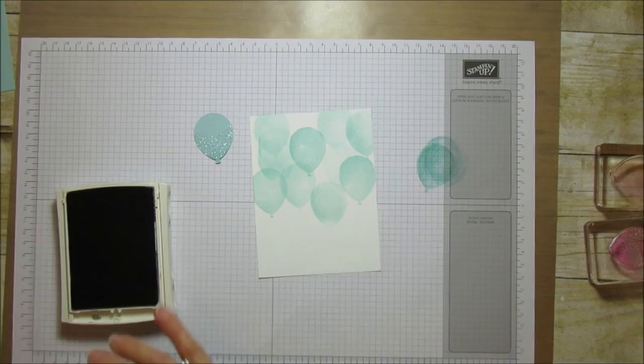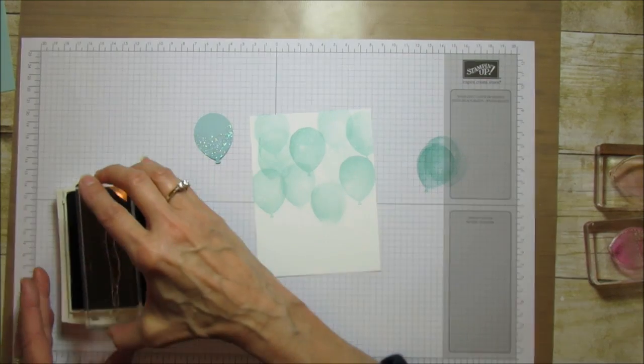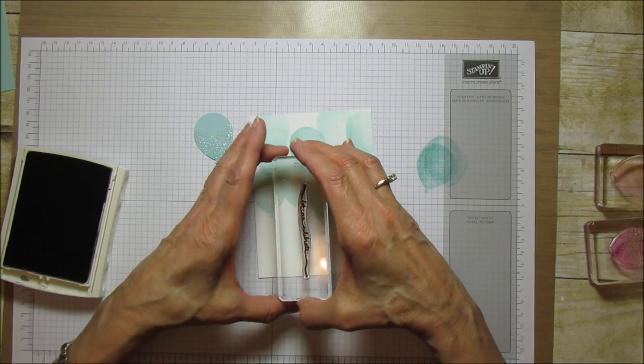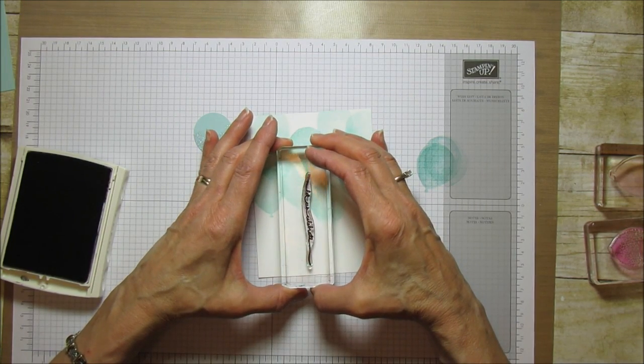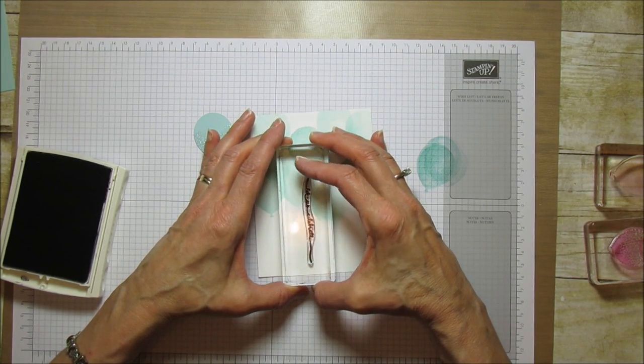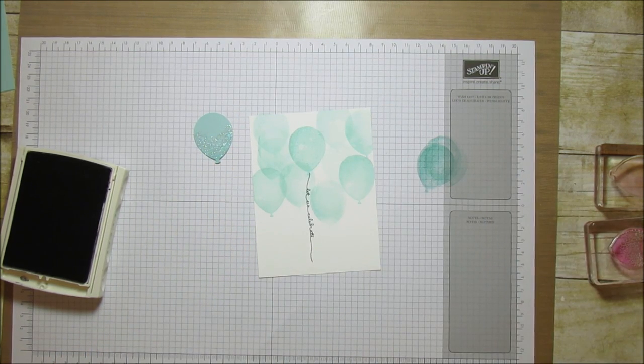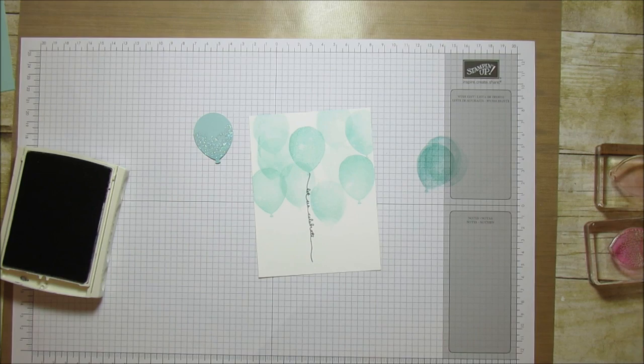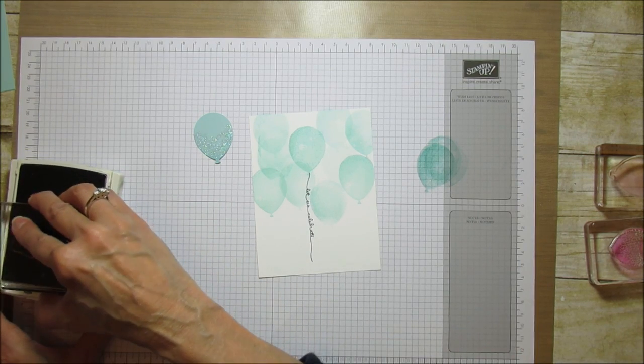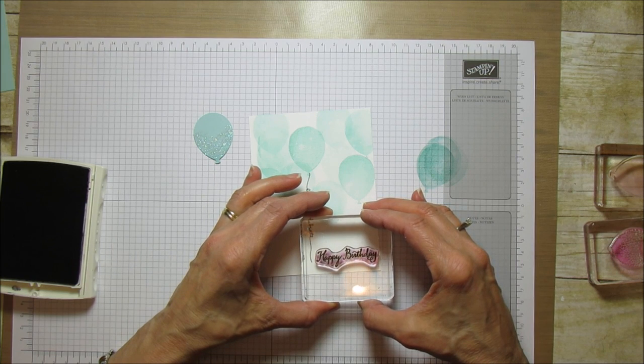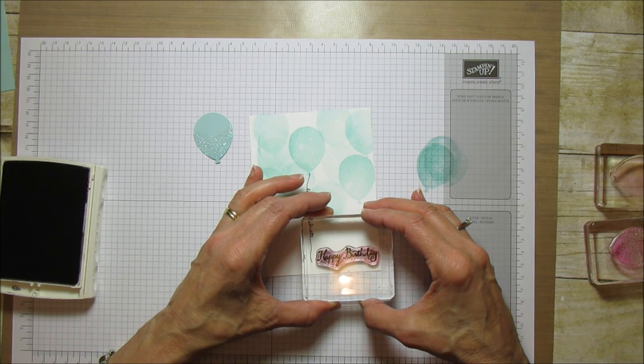I love this little string that goes on it - it says 'let us celebrate' and it's just really cute. This is also in that stamp set and I'm going to line it up here with that middle balloon. Isn't that adorable? Then I'm going to do the happy birthday down in the corner here.